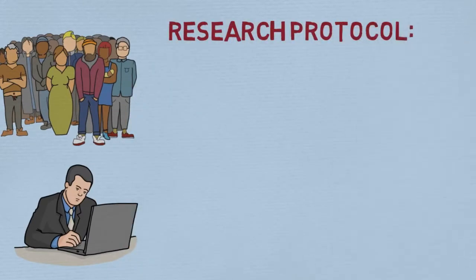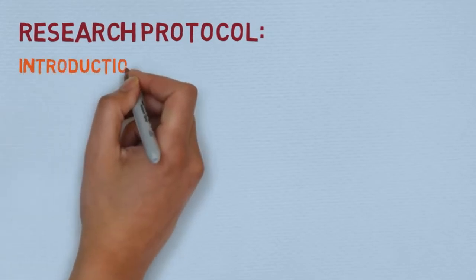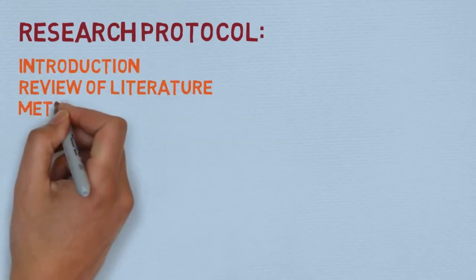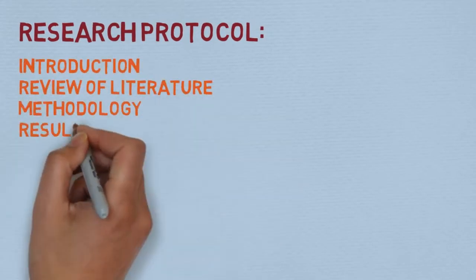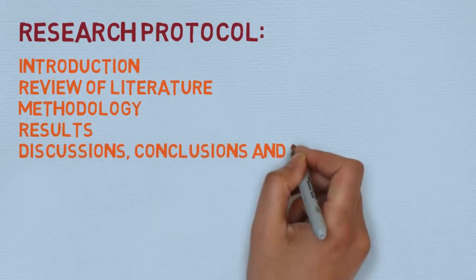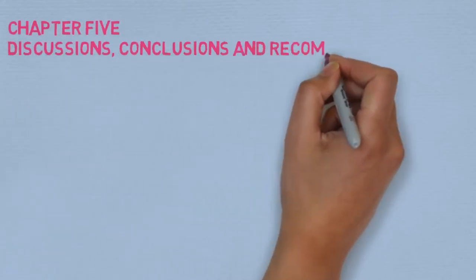The research protocol of a public health research paper includes the introduction, the literature review, the methodology, the results, and finally, in chapter 5, we have the discussion, conclusion, and recommendation.